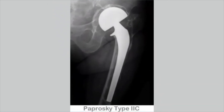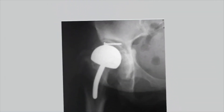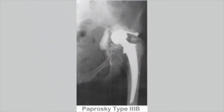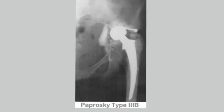This is type 2c with combined deficiency. This is type 3a, as we have discussed. And this is type 3b — there will be pelvic discontinuity and extensive acetabular bone loss from 9 o'clock to 5 o'clock position.